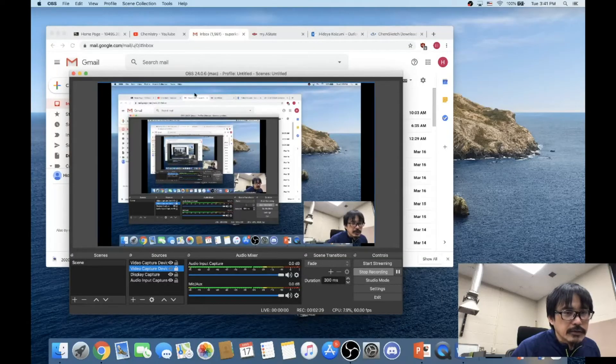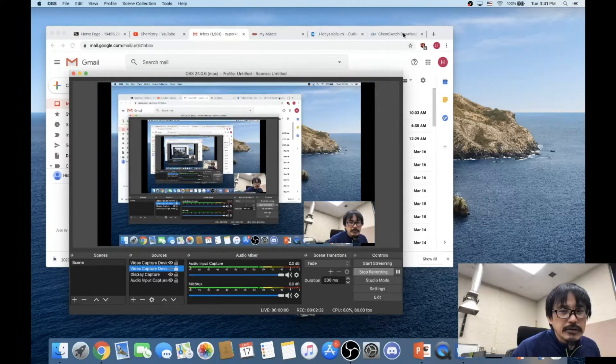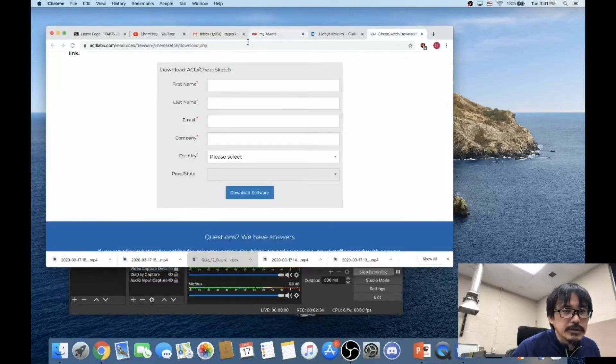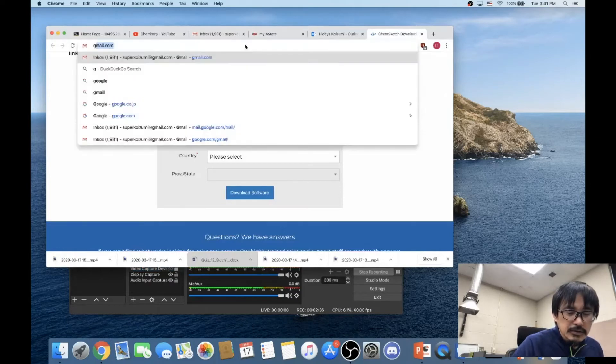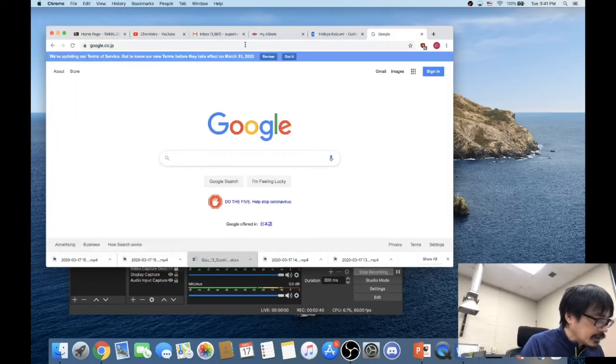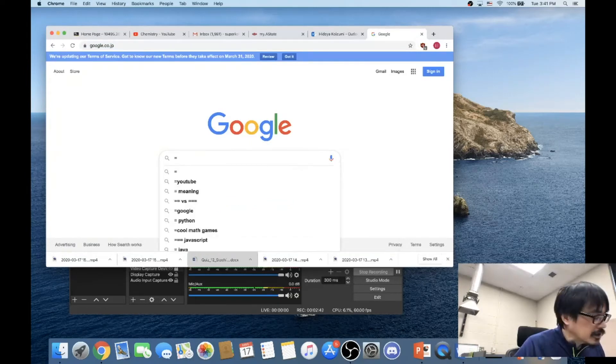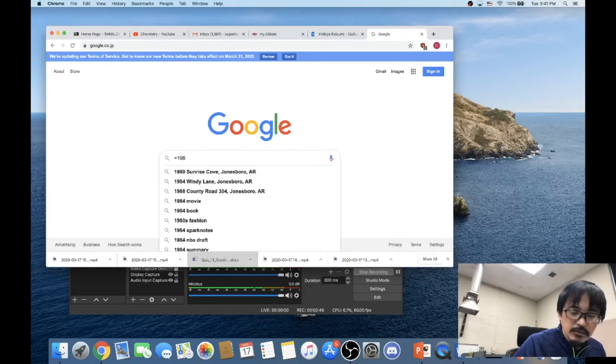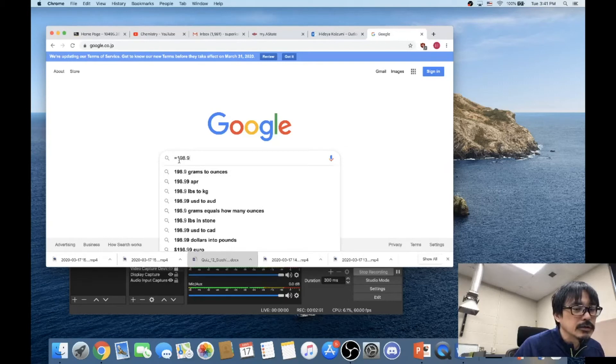Alright, so the good thing about doing this, I can use Google.com. And then you can actually make it equal to 198.9... that was negative. Sorry, that was negative. So let's see.